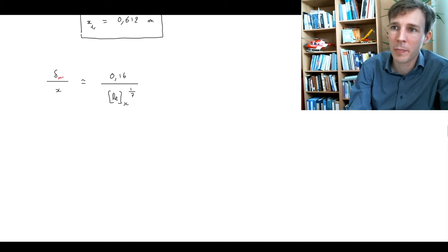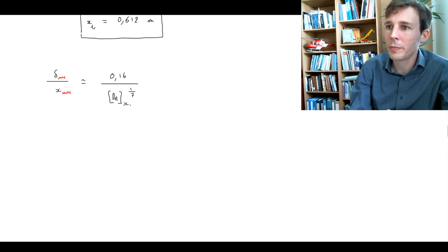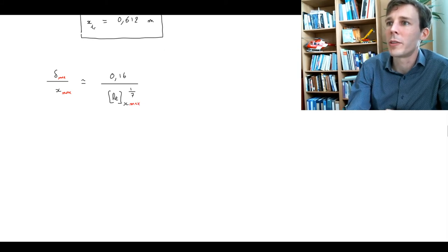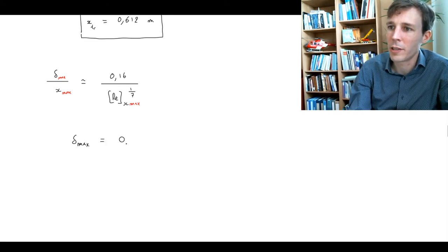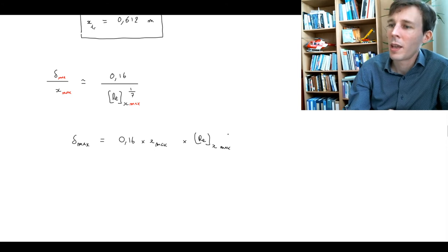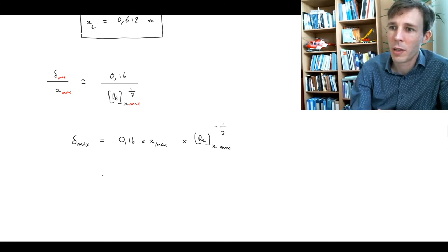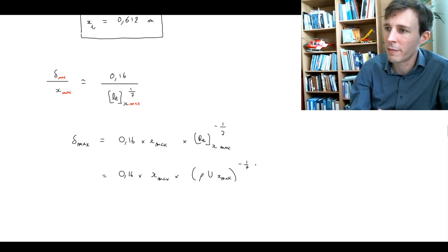So, anyway, what we only have here is delta max. And so, for this, we're going to put all the values at the x max position. And so, what we're going to do is to expand this and have it like this. So, delta max is, as it turns out, in our case, 0.16 multiplied by x max multiplied by the Reynolds number based on distance at its maximum value to the power of minus 1 over 7. And if we expand this further, we get 0.16 multiplied by x max multiplied by rho u x max to the power of minus 1 over 7. And then we have the mu, which is trailing over here, which is to the power of 1 over 7.